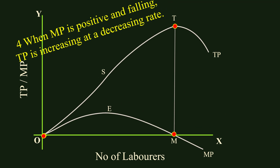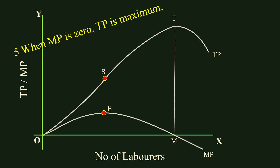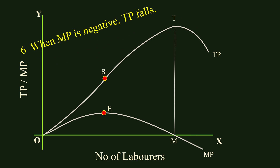The remaining two relations are the same with small changes in variables. Fifth relation: when marginal product is zero, total product is maximum. At point M, marginal product becomes zero. Corresponding to this, at point T on the total product curve, total product reaches the maximum. Sixth relation: when marginal product is negative, total product falls. In the segment of the marginal product curve that lies to the right of point M, marginal product is negative. That segment of the total product curve which lies to the right of T slopes downwards — total product in this segment is falling.